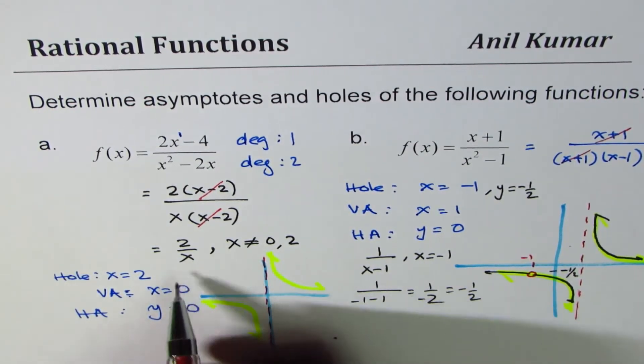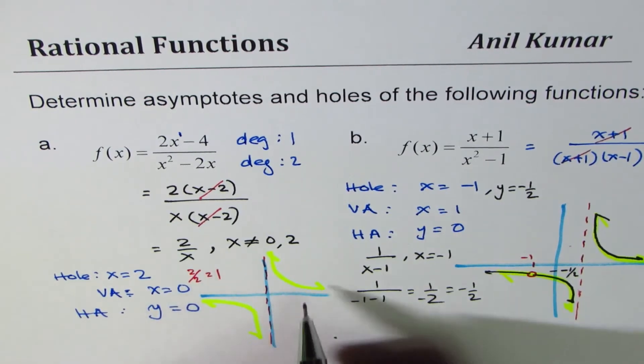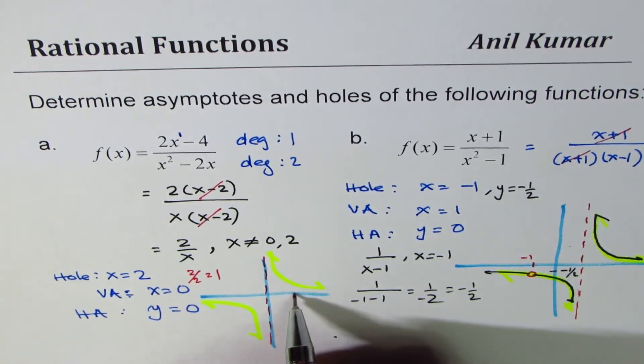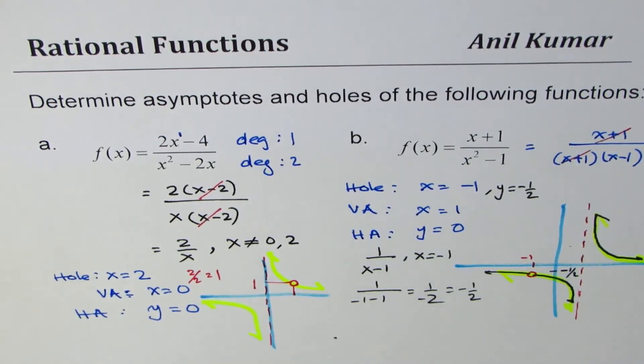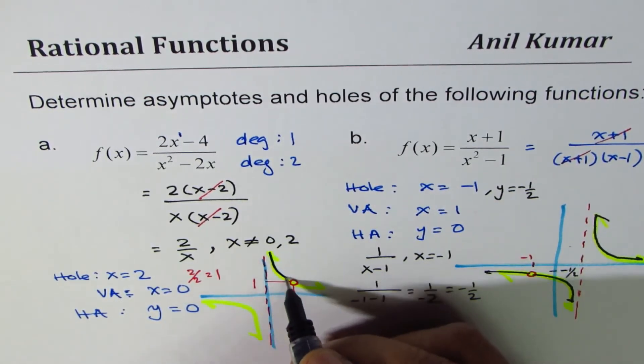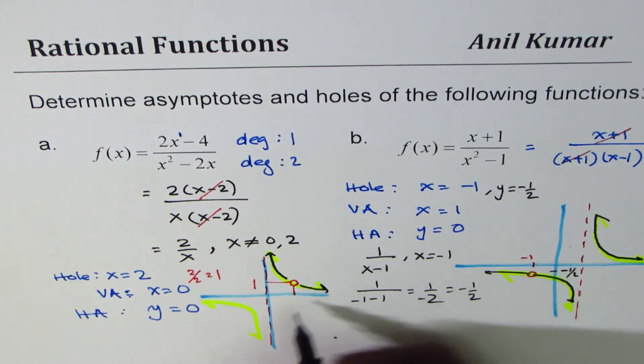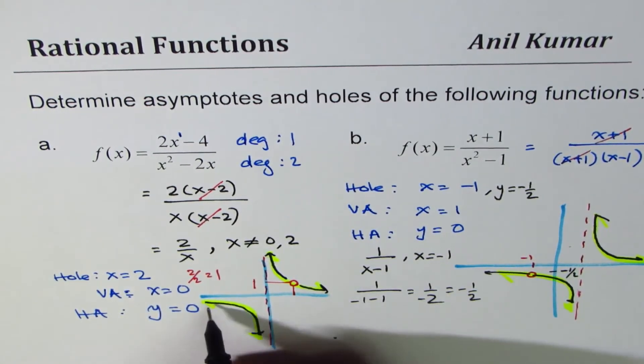If I write 2 here, I get 2 over 2, which is 1. So at 2 I have a hole which is at 1. Do you see that? So we can now sketch this graph as this.